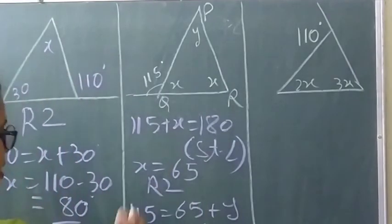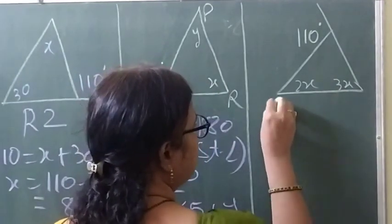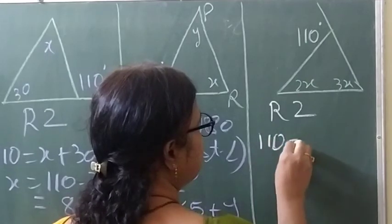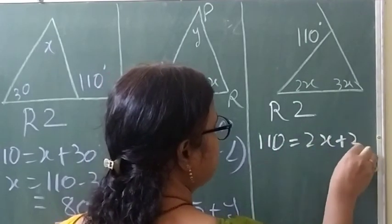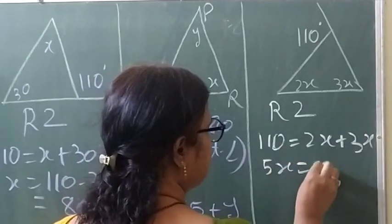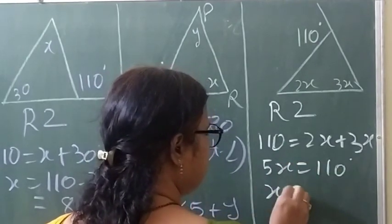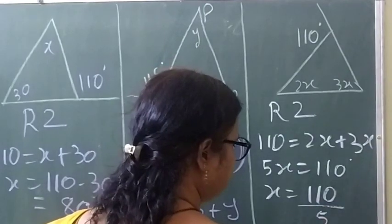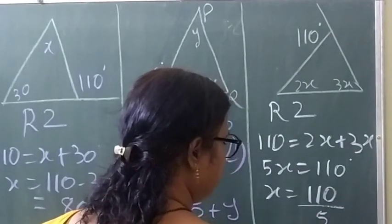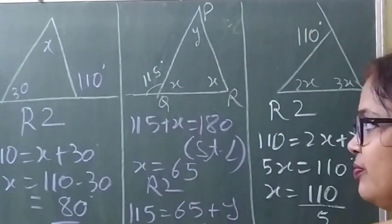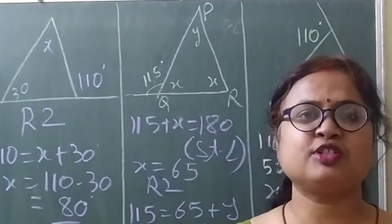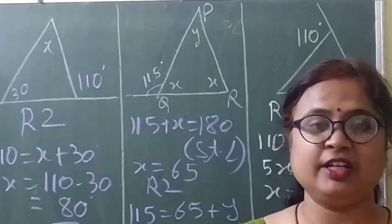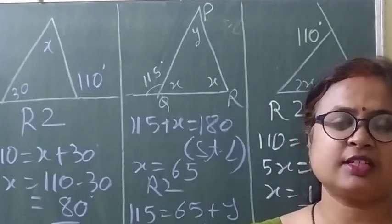In the third figure, using Reason 2: 110 equals 2x plus 3x. So 5x equals 110, and x equals 110 divided by 5, which is 22 degrees. So all different types of questions on the topic of triangles have been done. I hope all the sums are very clear to all of you. Thank you very much for this class, have a nice day.